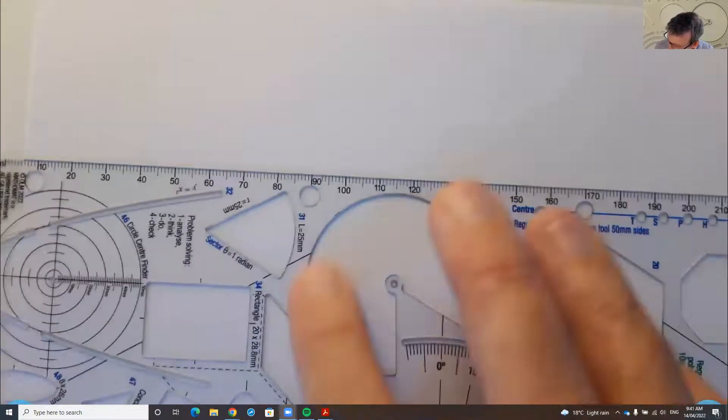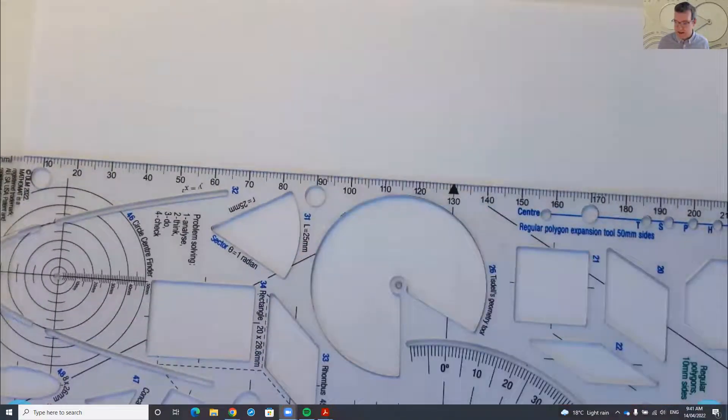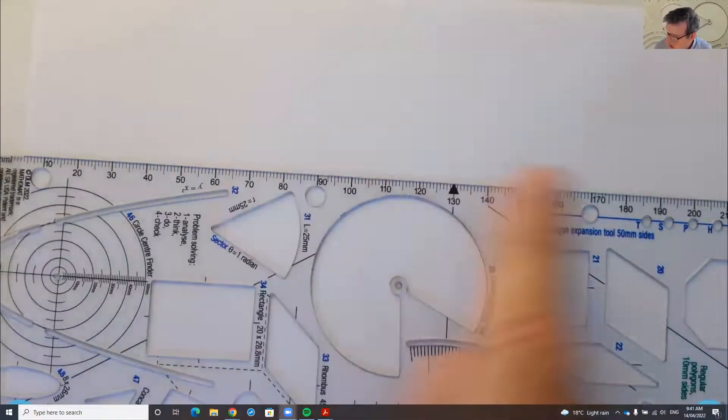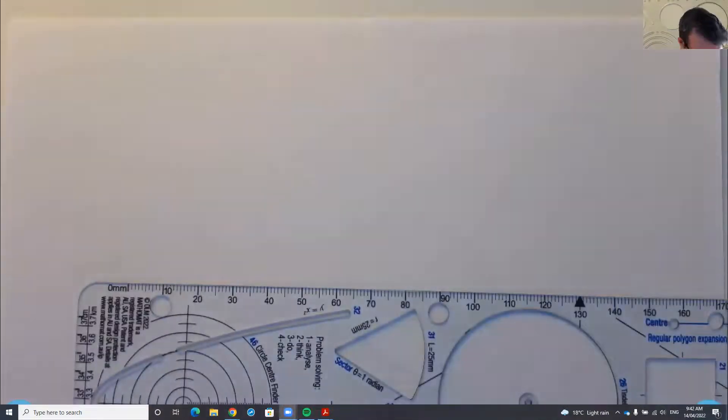So this is like going to be our compass and then we've got our straight edge. Even though there are markings on these things, they're not necessary for the construction that I'm going to show you today.